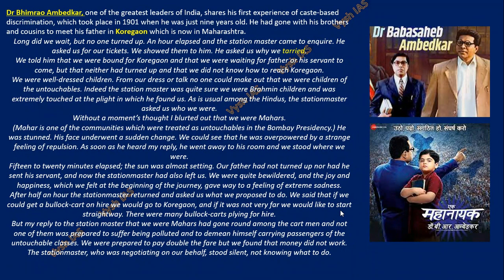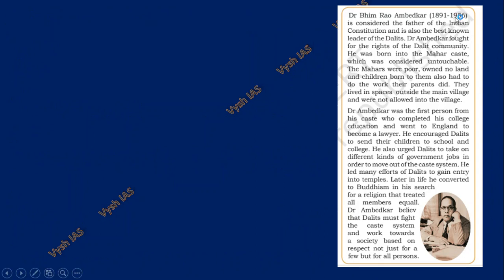This was one of many such experiences for Ambedkar. Through it he saw that even money can't change things — it is education that is the only thing that can change the caste mentality. His timeline is 1891 to 1956, and he is considered the father of the Indian Constitution because he was the chairman of the drafting committee. It's not like he single-handedly wrote the entire constitution — he was the chairman who gave final approval. He fought for the rights of the Dalit community. He was born into the Mahar community — they were poor, owned no land, and children born to them also had to do the work their parents did. They lived in spaces outside the main village and were not allowed inside.